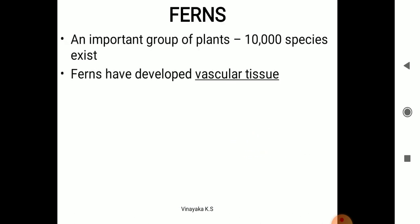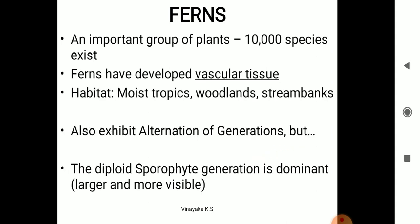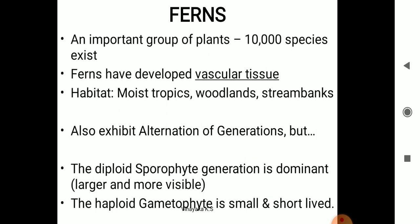Ferns have well-developed vascular tissues and grow in all habitats. All pteridophytes have fern and fern ally groups. The sporophyte is diploid in nature — the sporophyte does not depend on the gametophyte.